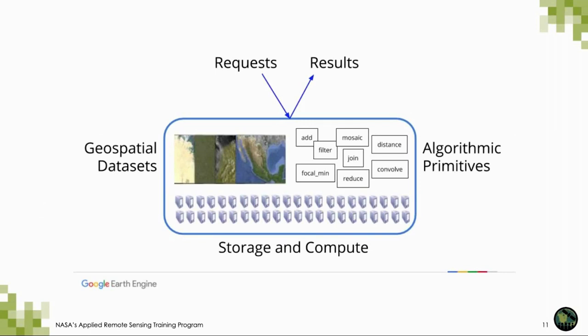This is just a visualization of what Earth Engine is doing. The user, or the coder, is sending a request to Google's computer processing power using geospatial data sets of interest. The requests are being sent to Google where computations and analyses are done, and then the results are sent back and displayed on our web browser.